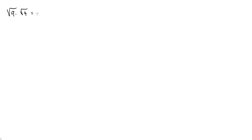When you multiply radicals, let's take a very simple example: radical 9 times radical 4. Can I simply multiply the two numbers inside the radicals and get radical 36? What's radical 9? It's 3. What's radical 4? It's 2. What does that equal? 6. And is that the square root of 36? Sure is.